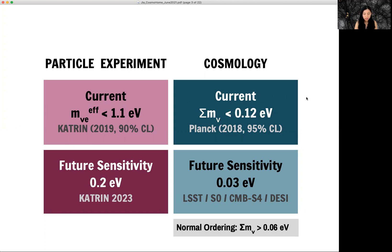From the cosmology side, the current constraint, best constraint is from the Planck satellite combined with several ground-based experiments. And we have an upper limit of 0.12 EV.